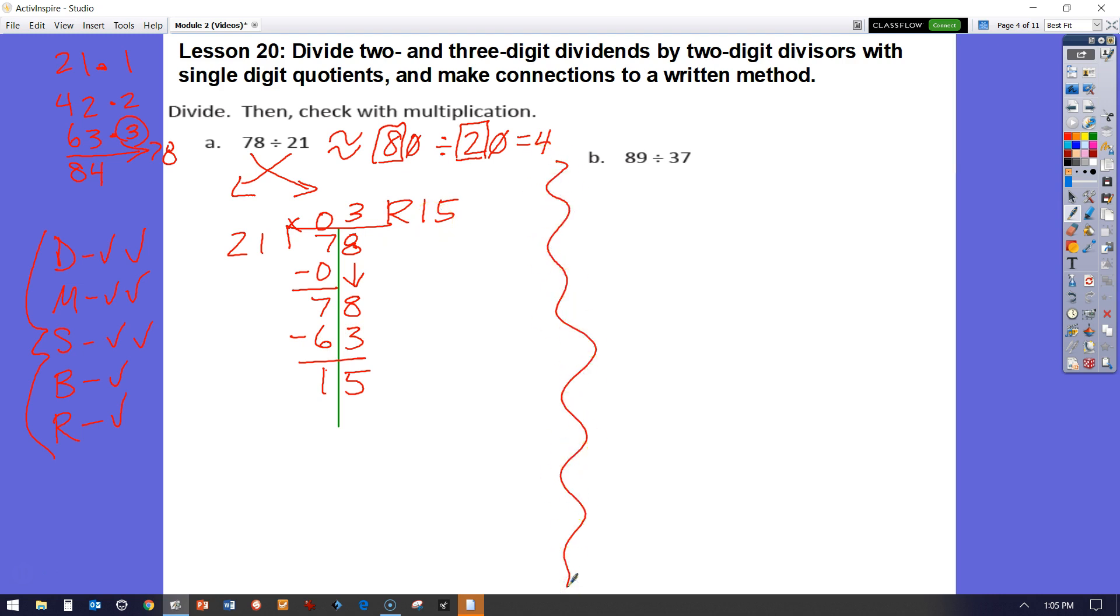Let's take a look at B here. We're going to do the same thing. Remember our dividend's going to go underneath our division side and our divisor's going to go outside. So now we have 89 divided by 37. I know that 8 tens cannot be divided by 37. So that's going to be zero. Next step is multiplication. 0 times 37 is 0. Next step is subtraction. 8 minus 0 is 8. Next step, bring down my 9.